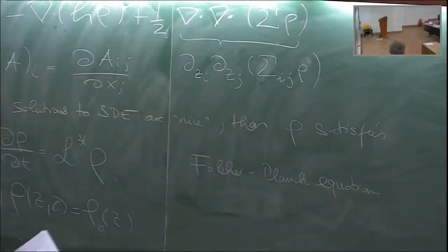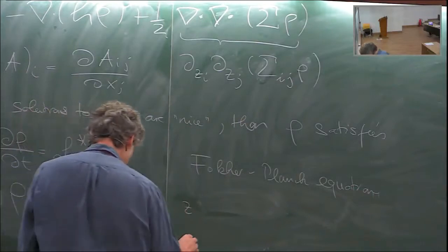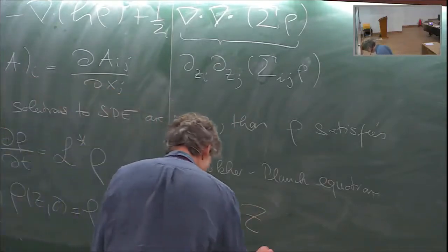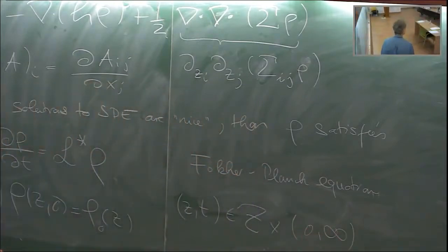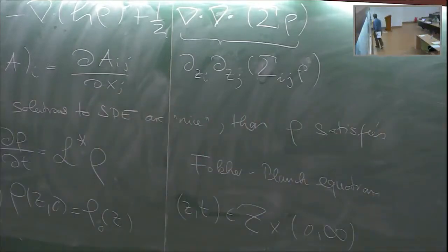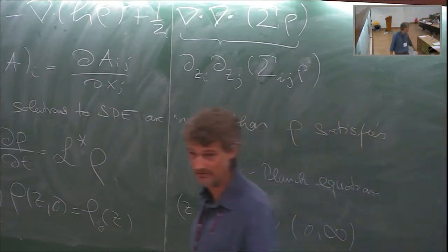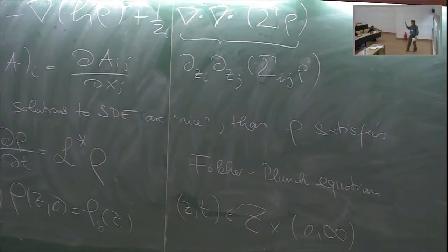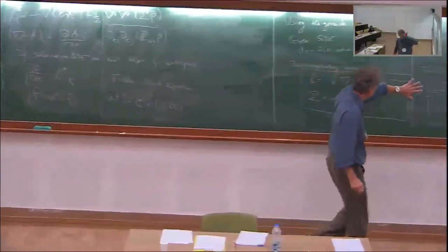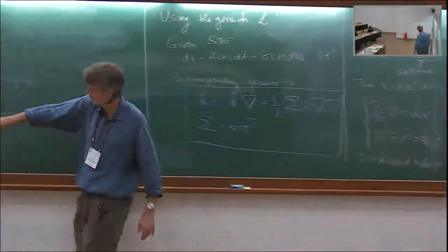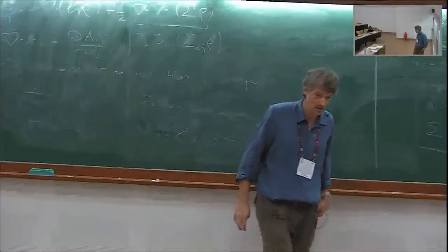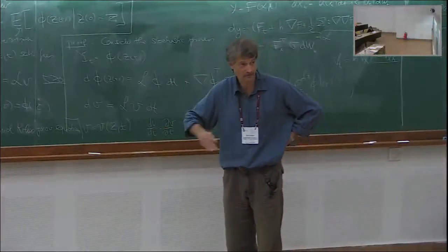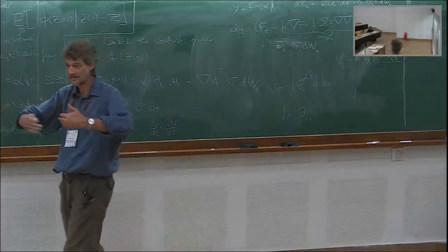So we now have three pictures: the SDE picture, the expectation-value picture (backward Kolmogorov equation with generator L), and the density picture (Fokker-Planck equation with adjoint L*). We can relate them via these generators L and L*. This is now the end of the background material. In the next lecture, we'll start with deterministic systems and model reduction, then stochastic systems, and finally deterministic systems with diffusive limits.